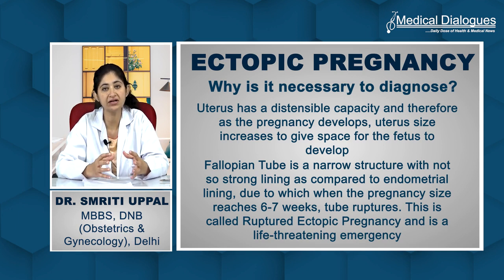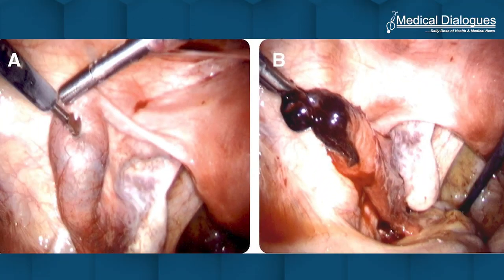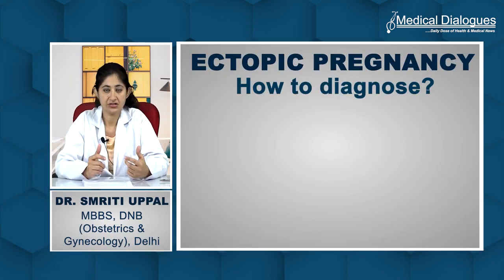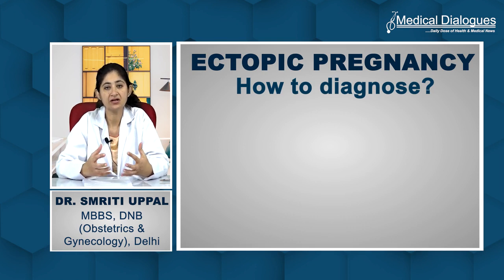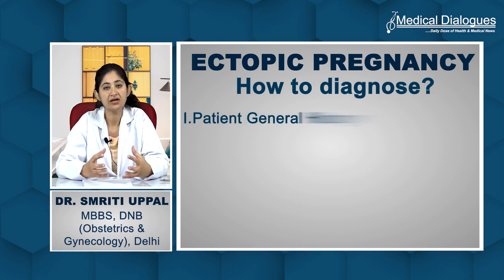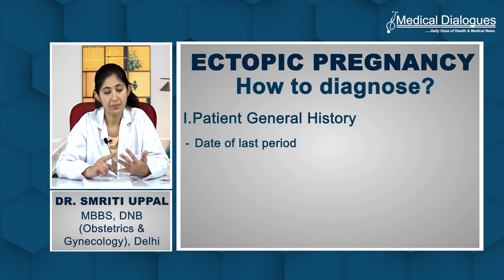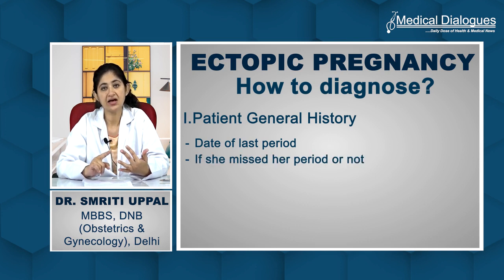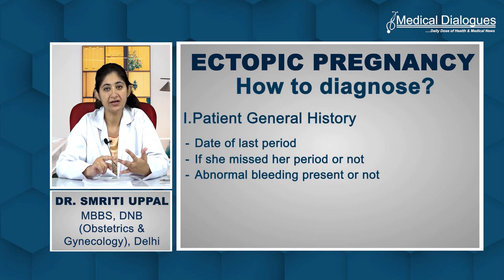A ruptured ectopic must be immediately diagnosed and treated; the treatment is surgery. To save the patient's life, she must be taken for surgery immediately, the internal bleeding stopped, and only then can the patient's life be saved. When diagnosing, whenever a pregnant patient comes to you, take a proper history — ask the date of her last period, whether she missed her period, and whether she has any abnormal bleeding.